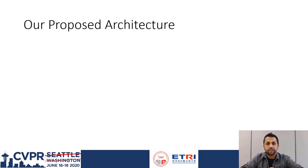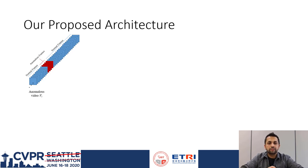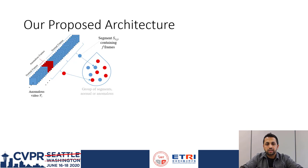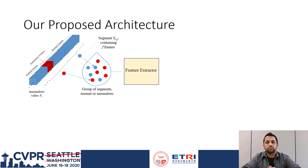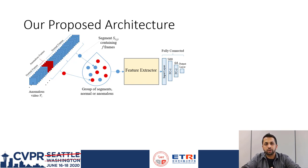Now I will introduce our weakly supervised architecture for anomaly detection. Given a video annotated as anomalous — meaning some of the frames contain anomalous events — some frames of the video are taken to form segments, which is the basic processing block for our system. All segments from one video are viewed as a group. Our system does not have any information on which segments contain anomalous events; the red and blue colors are only for visualization. Each segment is passed to a feature extractor one by one, and the features are then input to a fully connected network with two hidden layers of size 500 and 64. The output is a regression score between 0 and 1, with 0 being normal and 1 being anomalous.